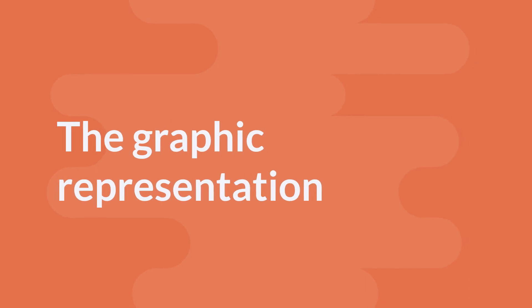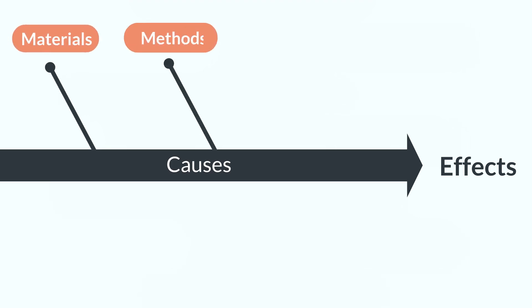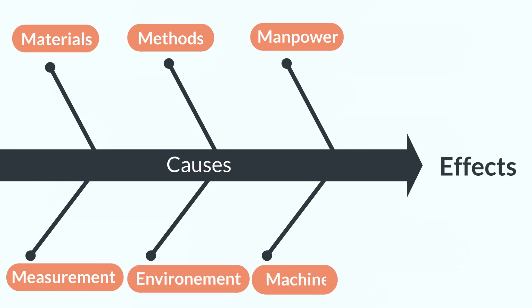A common use of the Ishikawa Diagram is quality defects prevention, to identify potential factors causing an overall effect. The major categories of causes of a problem are: six categories — materials, methods, manpower, measurements, environments, and machines.